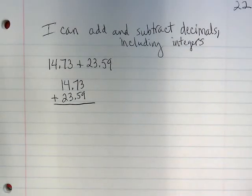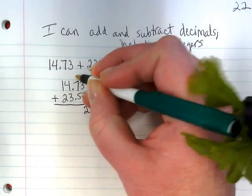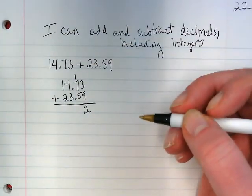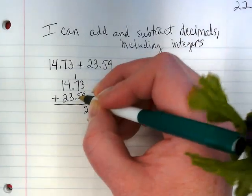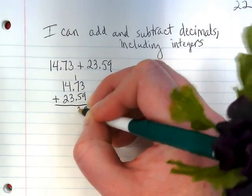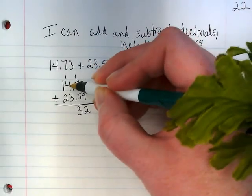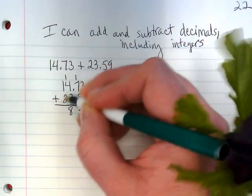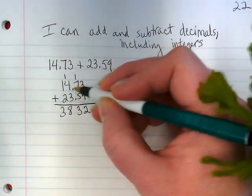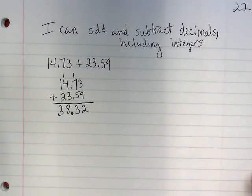We're going to add it by hand rather than use a calculator — it's good for your brain. Three plus nine is twelve, carry the one; one plus seven is eight; eight plus five is thirteen, carry the one; one and four is five, plus three is eight; and one and two is three. We bring the decimal straight down into its place because it's all lined up.